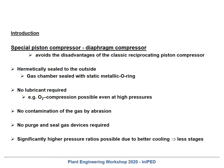A special reciprocating piston compressor is the so-called diaphragm compressor. This diaphragm compressor avoids the disadvantages of classical reciprocating piston compressors. It is hermetically sealed to the outside, so there are no moving parts where leakage flow can take place. The gas chamber is sealed with a static metallic O-ring. No lubricant is required, and therefore it can easily be used for oxygen compression even at very high pressures. There is no contamination of the gas by abrasion because there are no wear parts in the system.